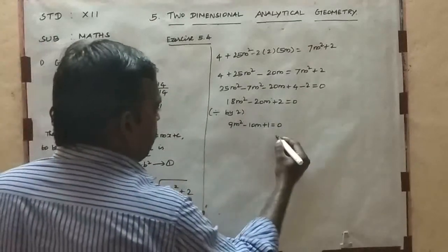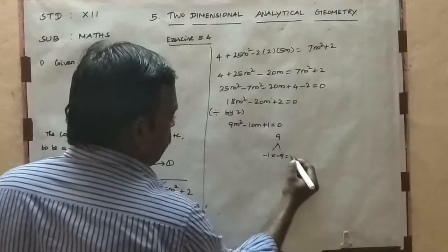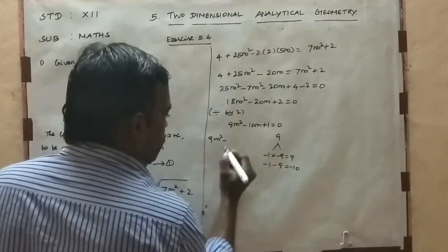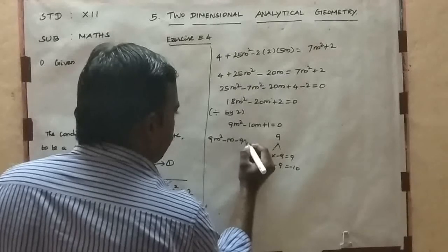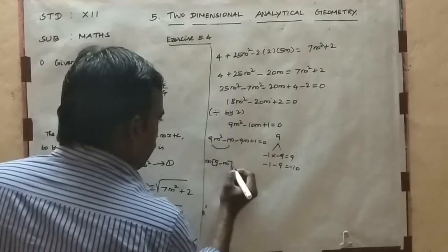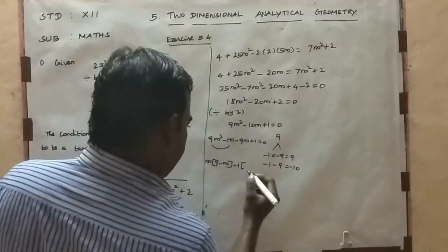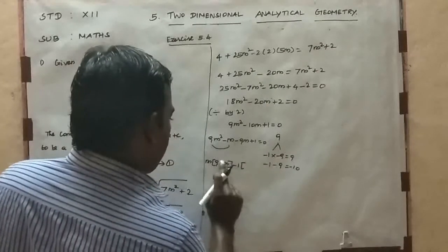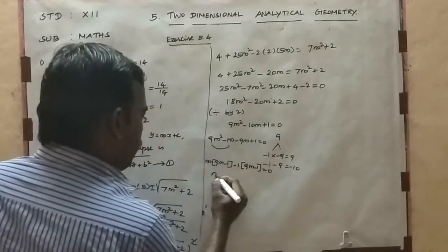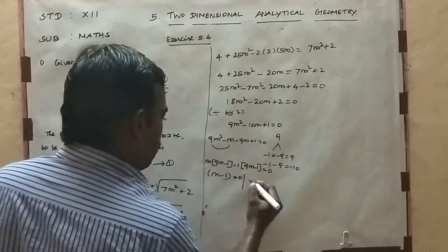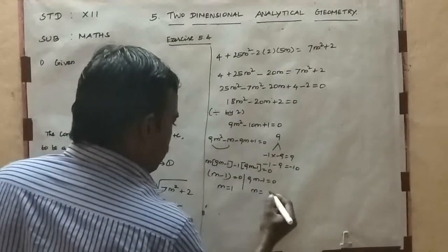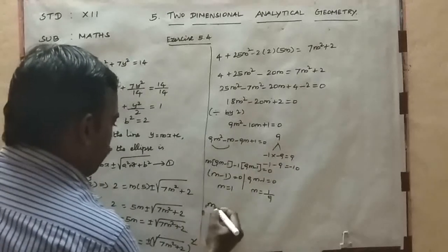Now factoring: 1 × 9 = 9, and factors −1 and −9 give −1 − 9 = −10. So 9m² − m − 9m + 1 = 0. Taking common factors: m(9m − 1) − 1(9m − 1) = 0. Therefore m − 1 = 0 or 9m − 1 = 0, giving m = 1 or m = 1/9.